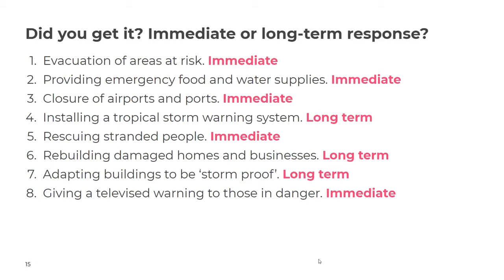Let's mark these together. Number one, evacuation of areas at risk: immediate. Number two, providing emergency food and water supplies: immediate. Number three, closure of airports and ports: immediate. Number four, installing a tropical storm warning system: long-term. Number five, rescuing stranded people: immediate. Number six, rebuilding damaged homes and businesses: long-term. Number seven, adapting buildings to be storm-proof: long-term. Number eight, giving a televised warning to those in danger: immediate. Give yourself a score out of eight.